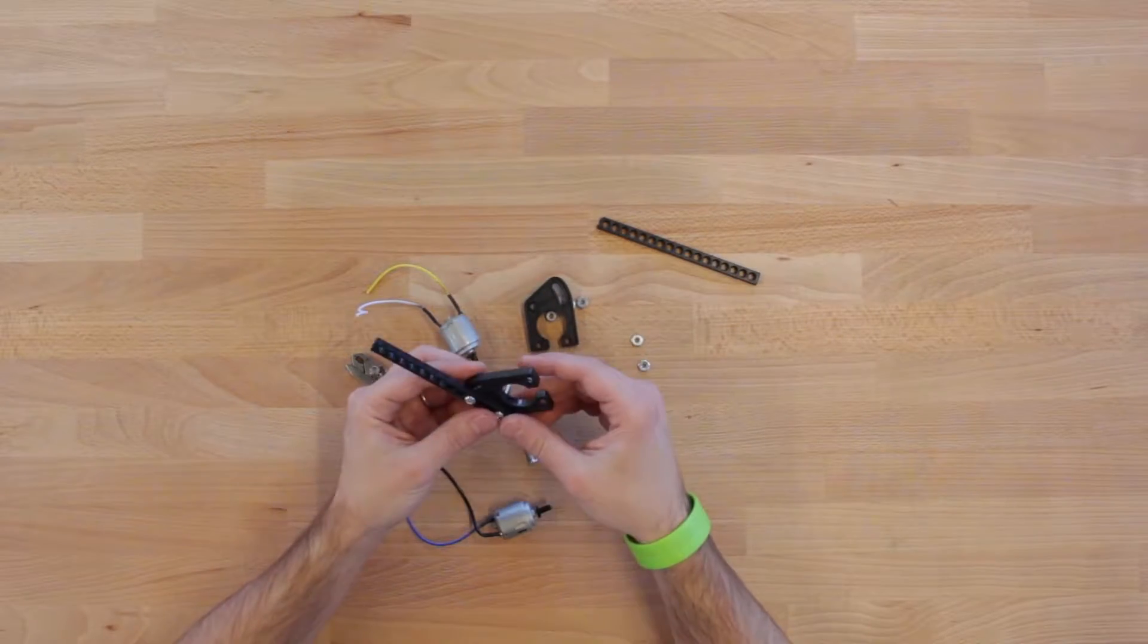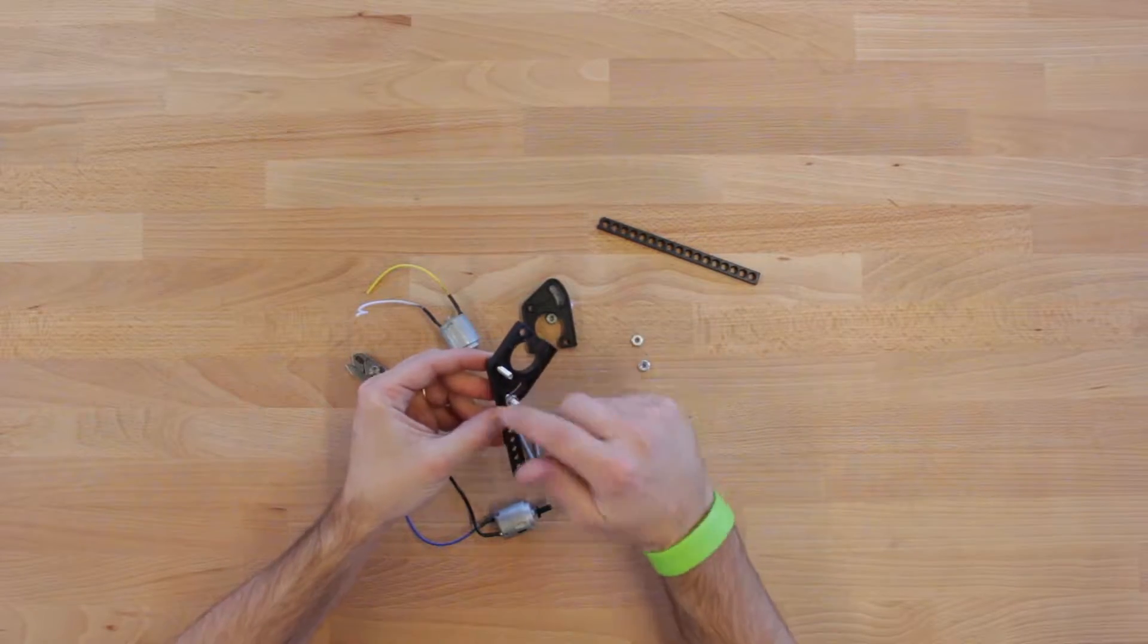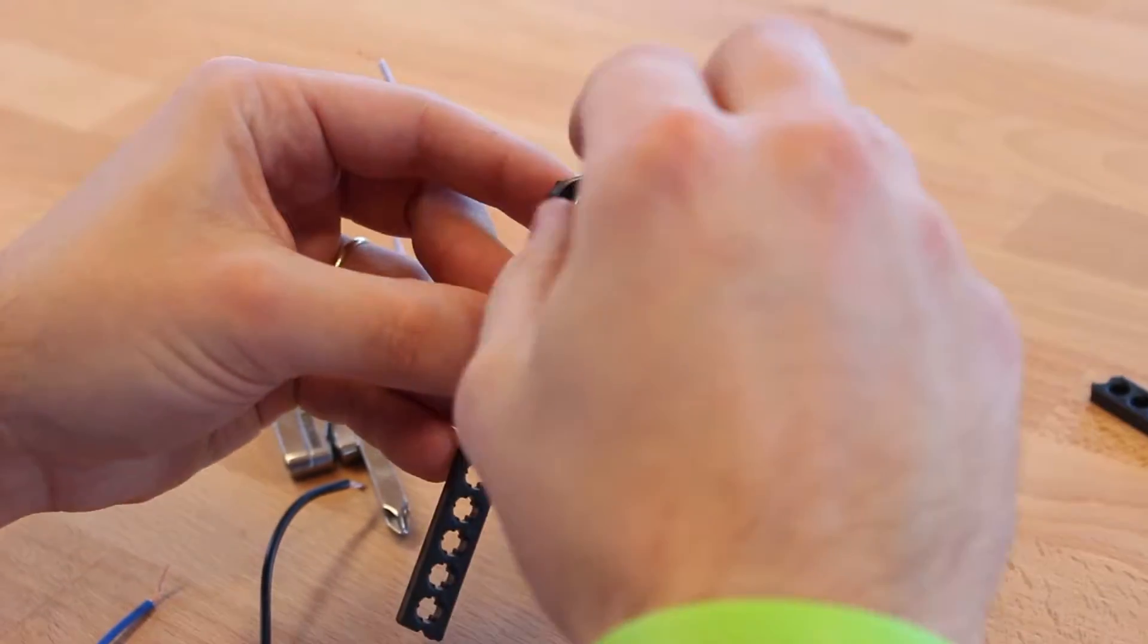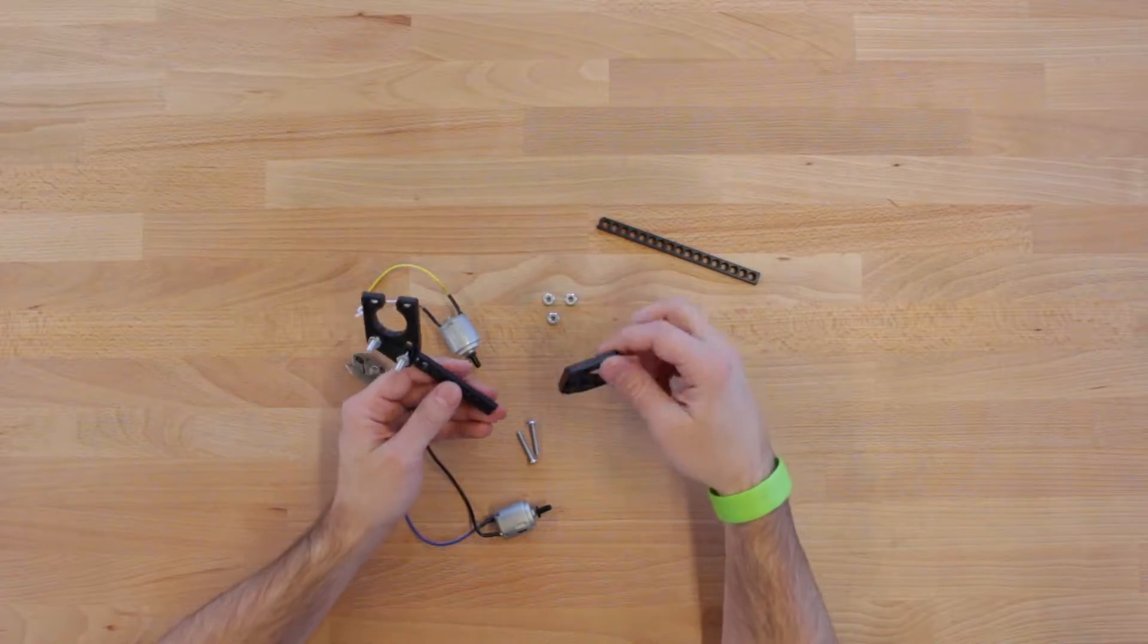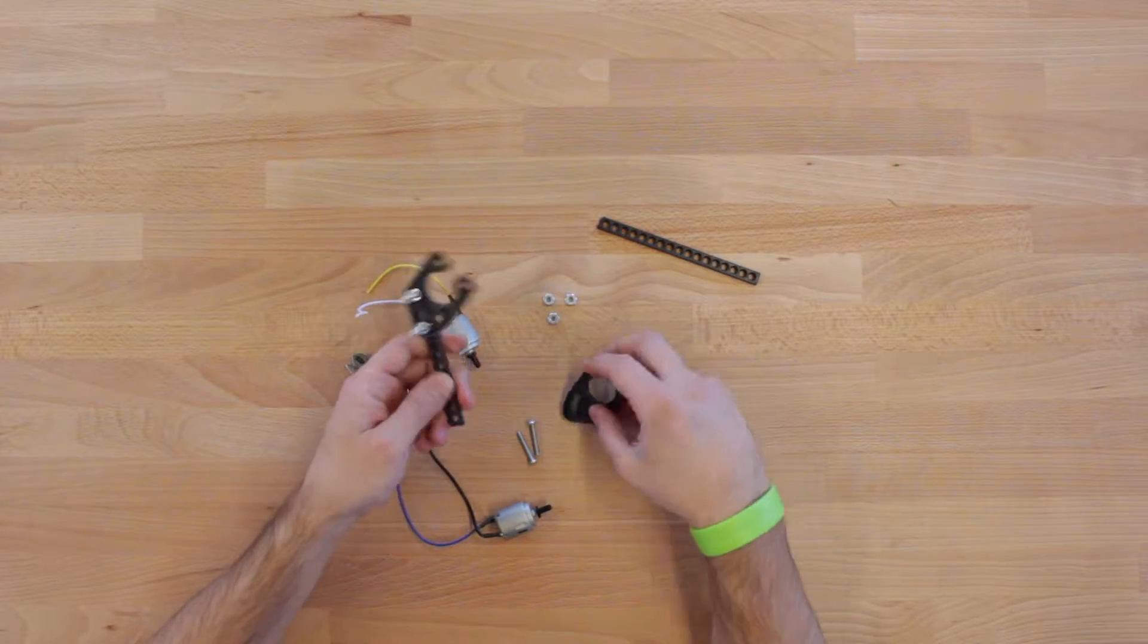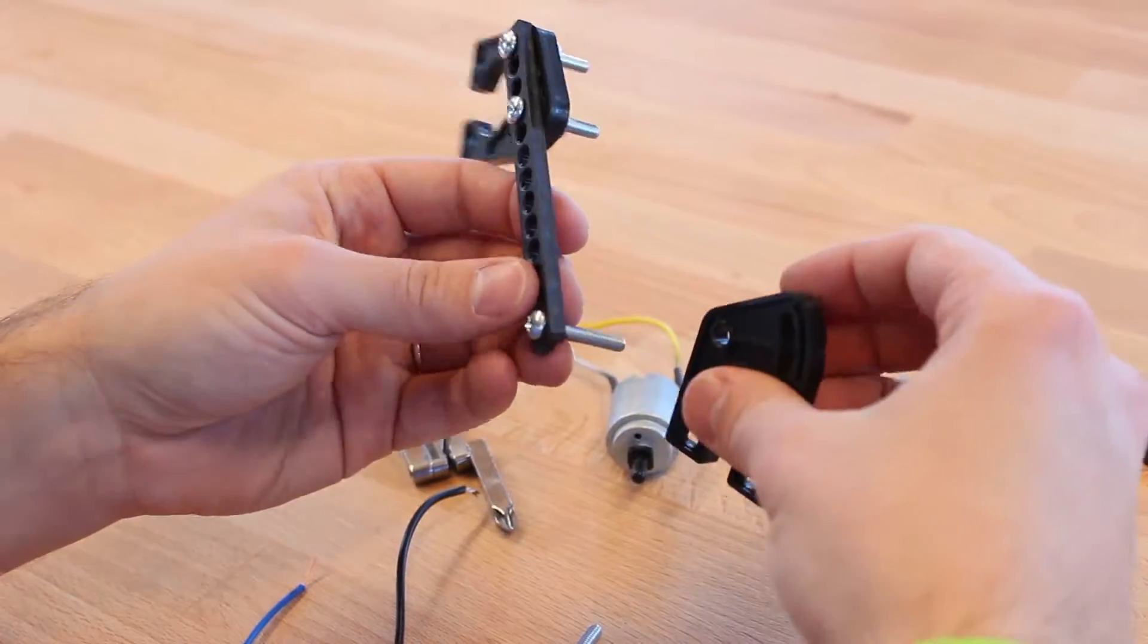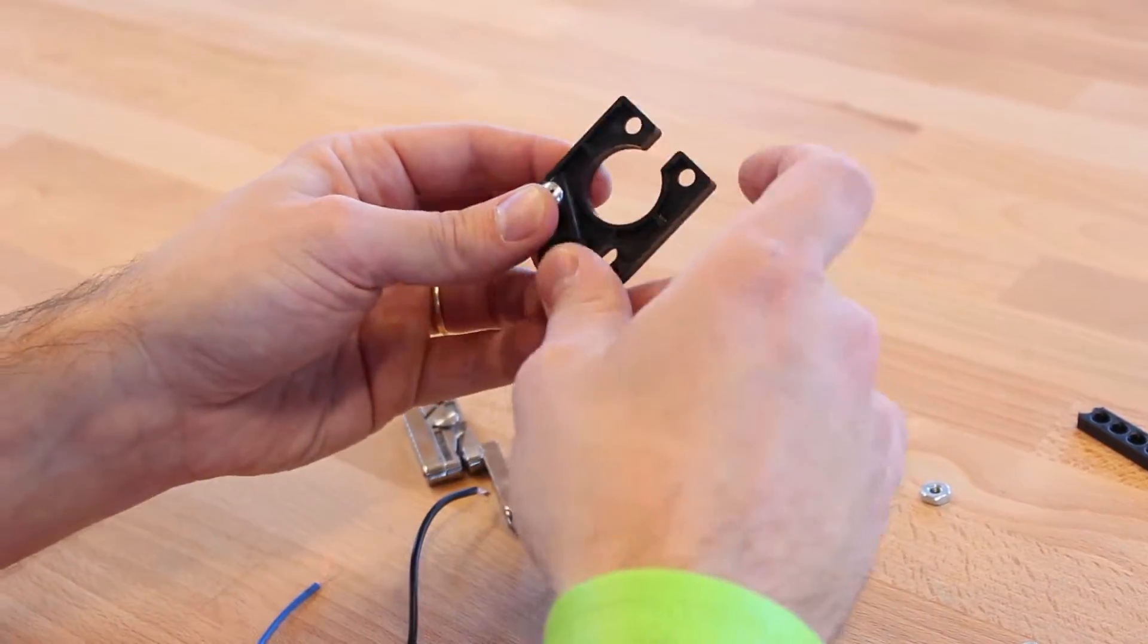Install a nut on each of these screws and screw it all the way down. The plate should be able to pivot back and forth like this. Repeat these steps for the other mounting plate on the other side of the 13-hole plate. Make sure the screw on the outside is going through the hole on the motor mounting plate.